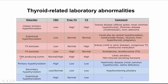Lastly among hyperthyroid conditions is a TSH-producing tumor, which is a kind of secondary hyperthyroidism. This is usually in the pituitary, where TSH originates. TSH can be elevated, and in response your T4 and T3 will also be elevated.